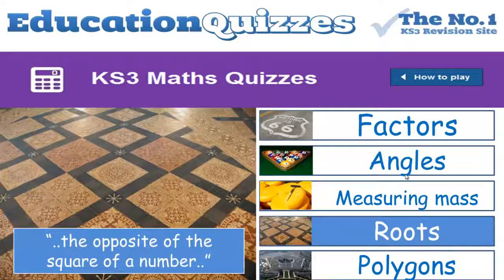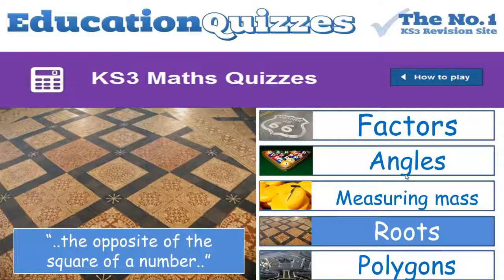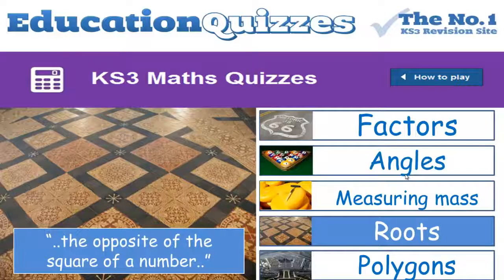You probably know how to find the square of a number. For example, the square of 4 is 16, because 4 times 4 equals 16. The opposite of squaring a number is called finding the square root. For example, the square root of 25 is 5, because 5 times 5 equals 25. In this quiz, you'll also be asked to find cube roots. Cube numbers are formed by multiplying a number by itself three times. To find a cube root, all you have to do is reverse the process.